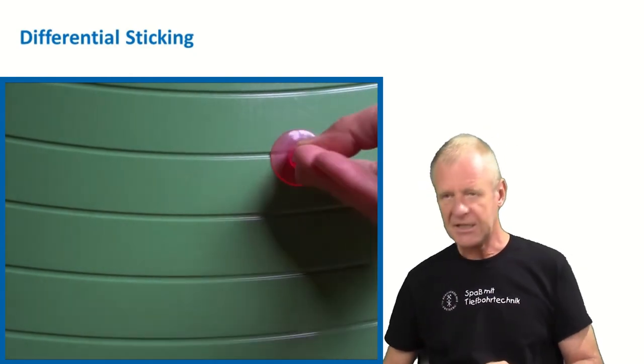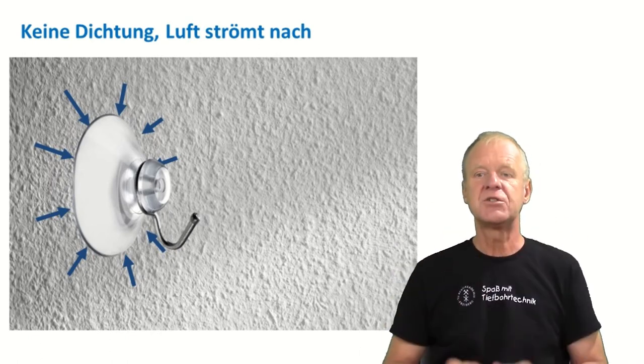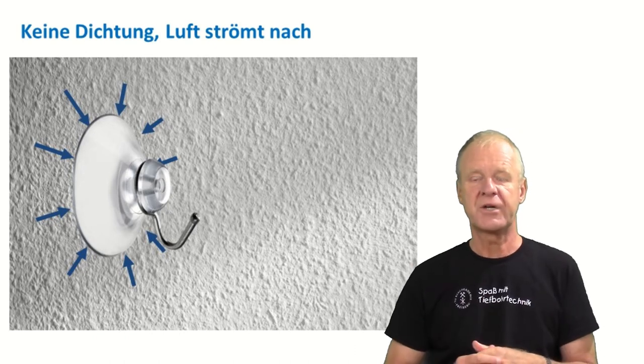This is because there is no effective sealing and air can flow behind the suction cup. There is no stable vacuum under the cup and due to the lack of differential pressure, the cup will not stay in place. It will fall off, like this.